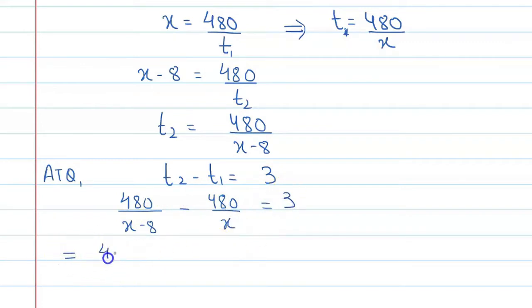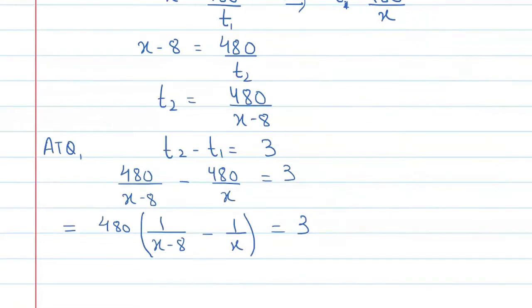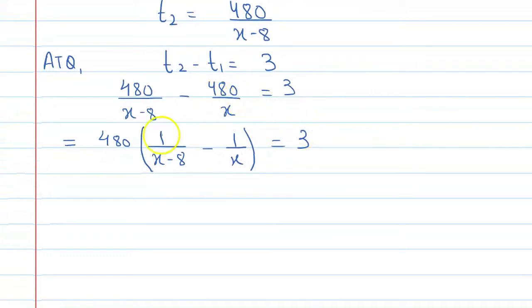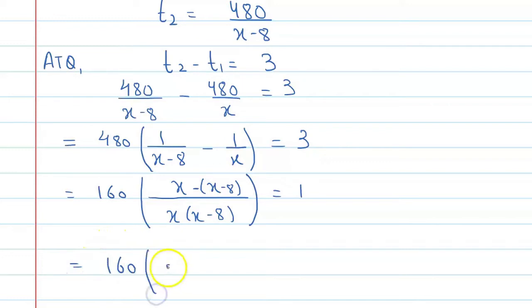We can factor out 480, giving us 480 times (1 upon (x minus 8) minus 1 upon x) equals 3. Taking the LCM as x(x minus 8), the numerator becomes x minus (x minus 8), which simplifies to 8. So we get 480 times 8 upon (x squared minus 8x) equals 3, and after dividing both sides, 160 times 8 upon (x squared minus 8x) equals 1.